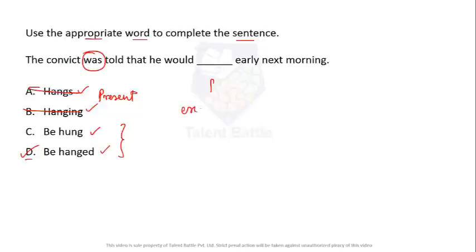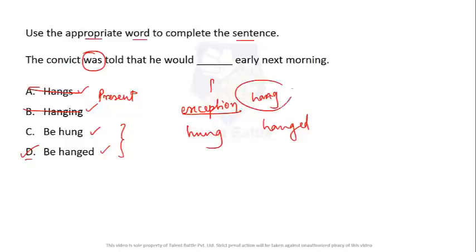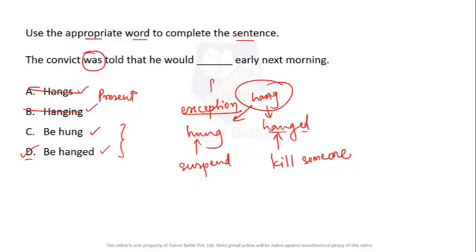This is an exception: both 'hung' and 'hanged' are past tense forms of 'hang,' but they are used differently. 'Hanged' is used only when referring to killing someone — giving capital punishment by hanging. 'Hung' is used when suspending an object by a rope or similar. Since the convict is being executed, the word 'hanged' must be used, not 'hung.' For example, 'I hung my clothes' uses 'hung.' So the answer is 'be hanged.' Please remember this exception.